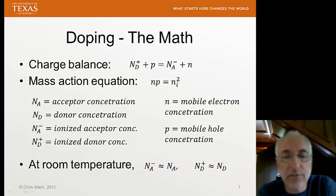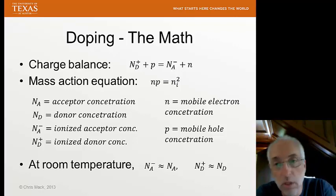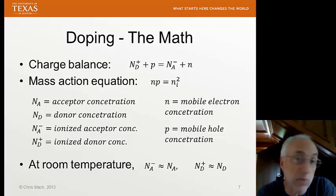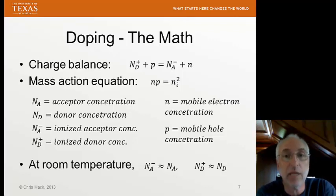Now the next thing we know is that there must be charge balance. The total amount of positive charges in the semiconductor must equal the total amount of negative charges. Where do the positive charges come from? Well, there's the ionized donors and the holes. So ND plus, plus P, the hole concentration, is the total amount of positive charge, and that must equal the total amount of negative charge, which is NA minus, the ionized acceptors, plus the free electrons.